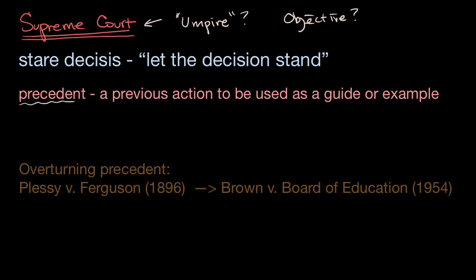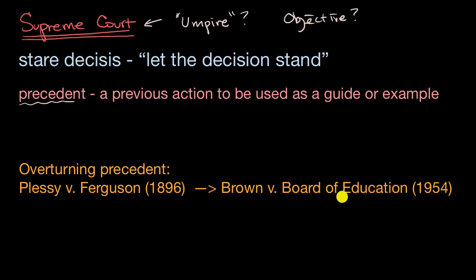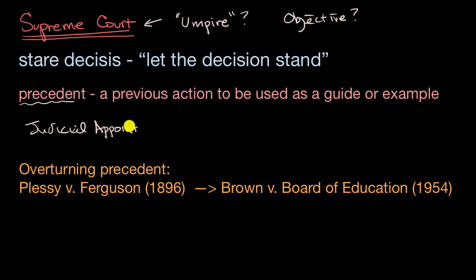A significant case of overturning precedent happened from 1896 to 1954. In 1896, the Plessy versus Ferguson case ruled that laws involving segregation are okay. But then, almost 60 years later, the Supreme Court in Brown versus Board of Education of Topeka ruled that separate but equal is not constitutional — that segregation is not okay. This was influenced by the fact that over time, presidents were able to make judicial appointments to the Supreme Court as members died or retired.